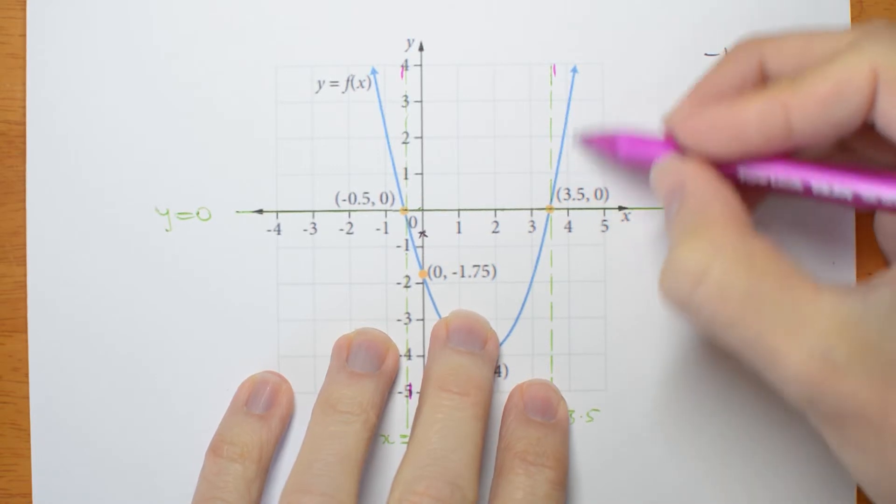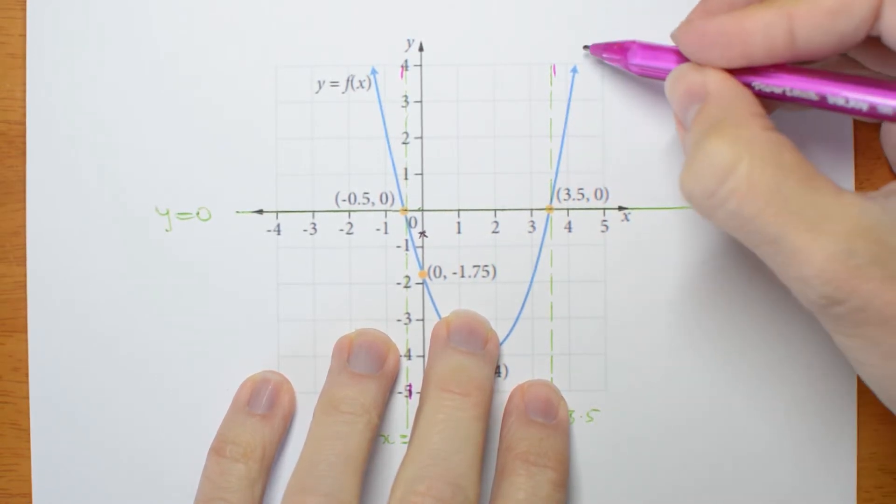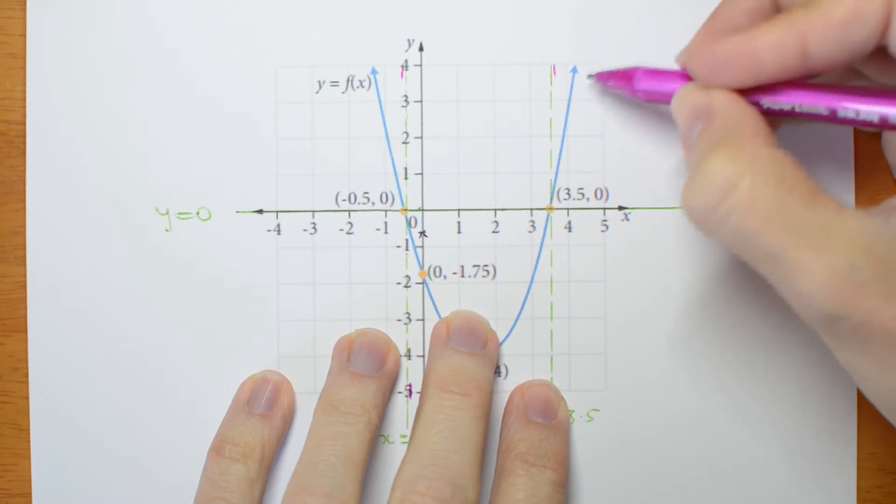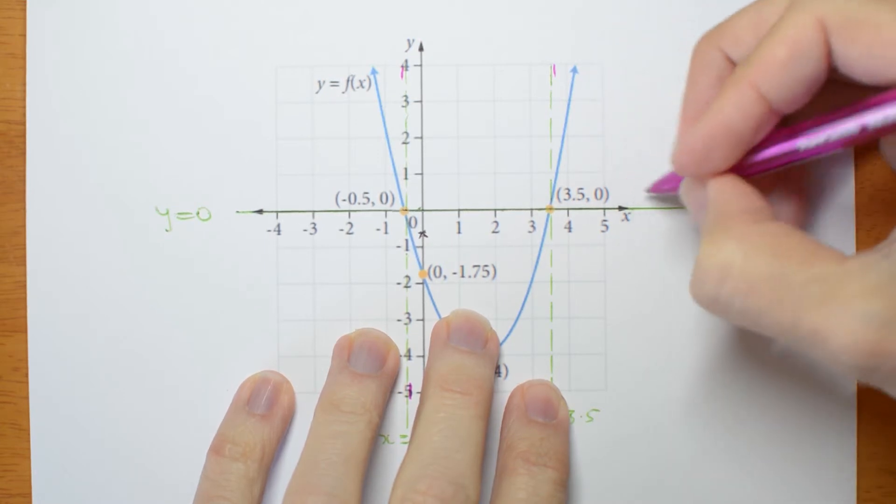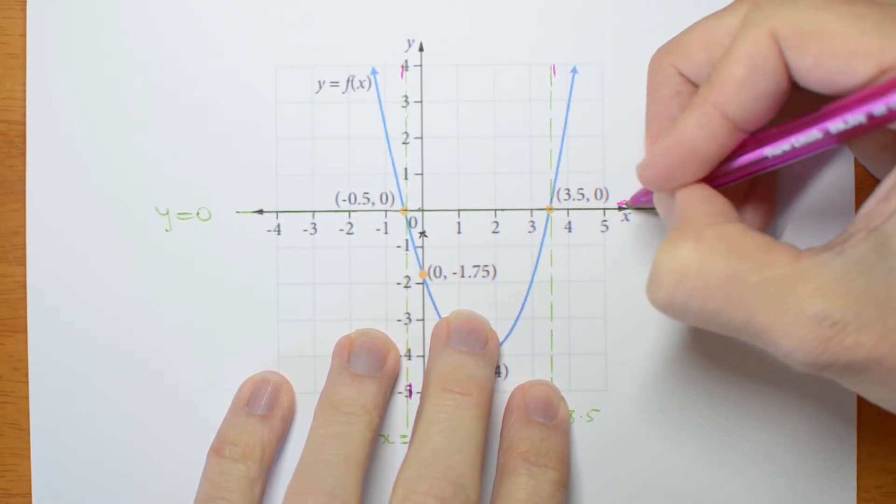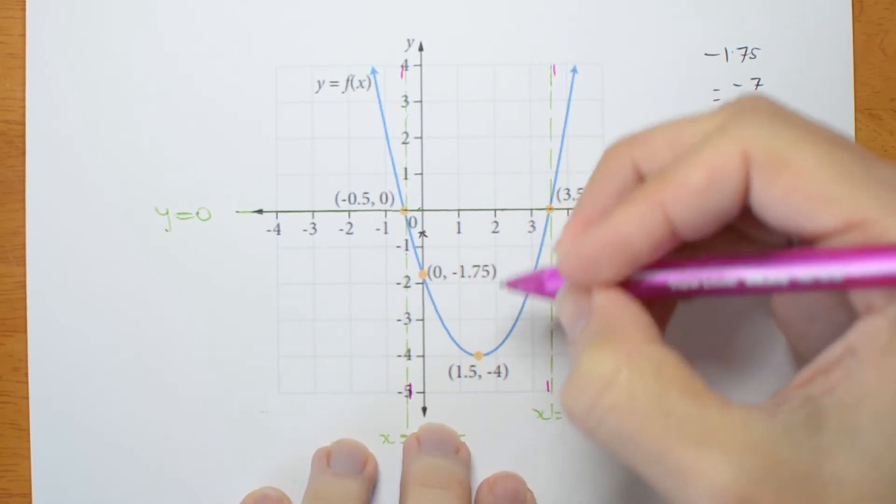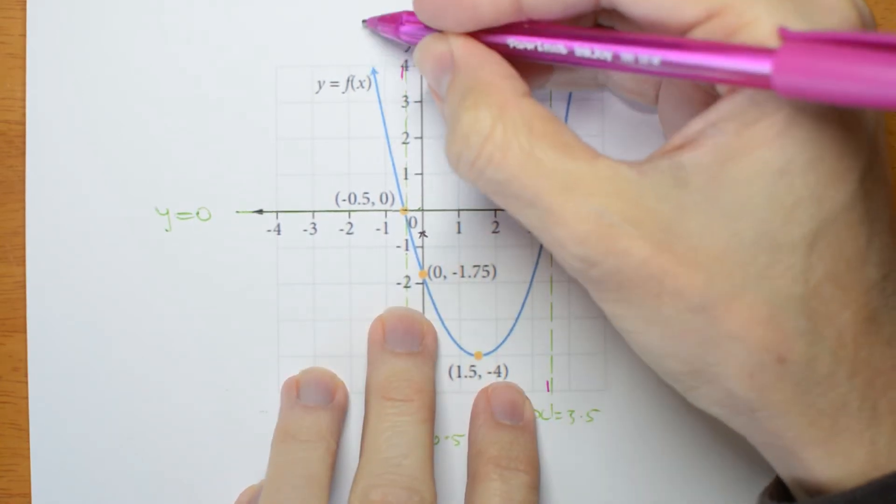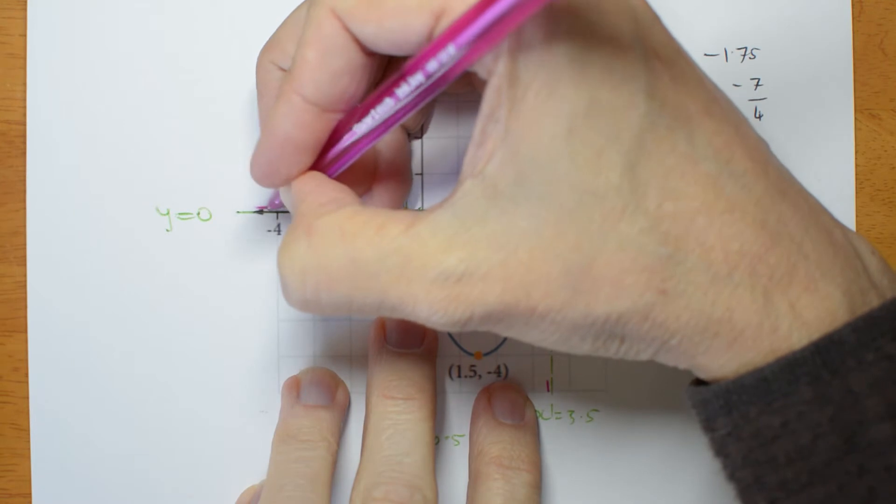Because this graph goes off to infinity. So as it's getting very, very large, its reciprocal is going to be getting very, very small. Same on this side. The graph is getting very, very large, so the reciprocal is getting very, very small.